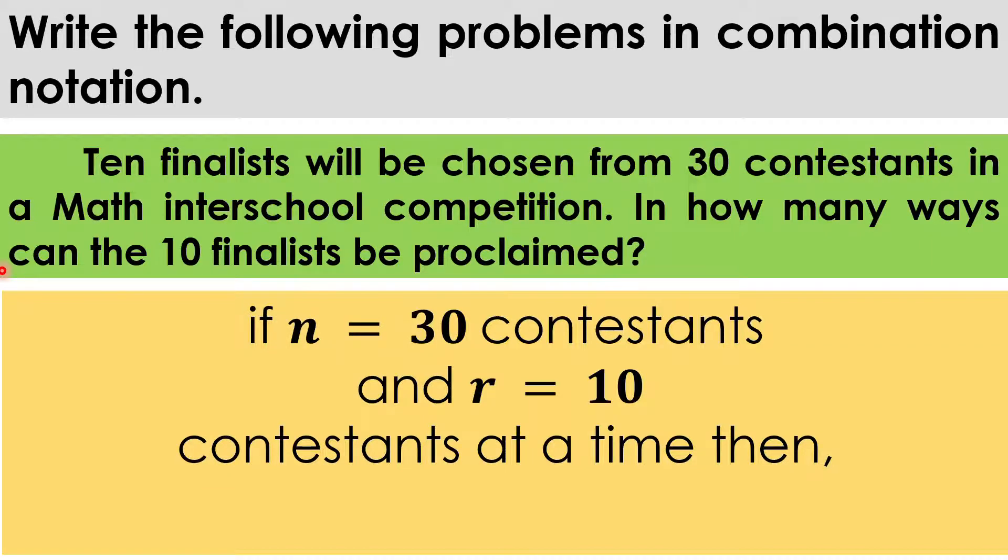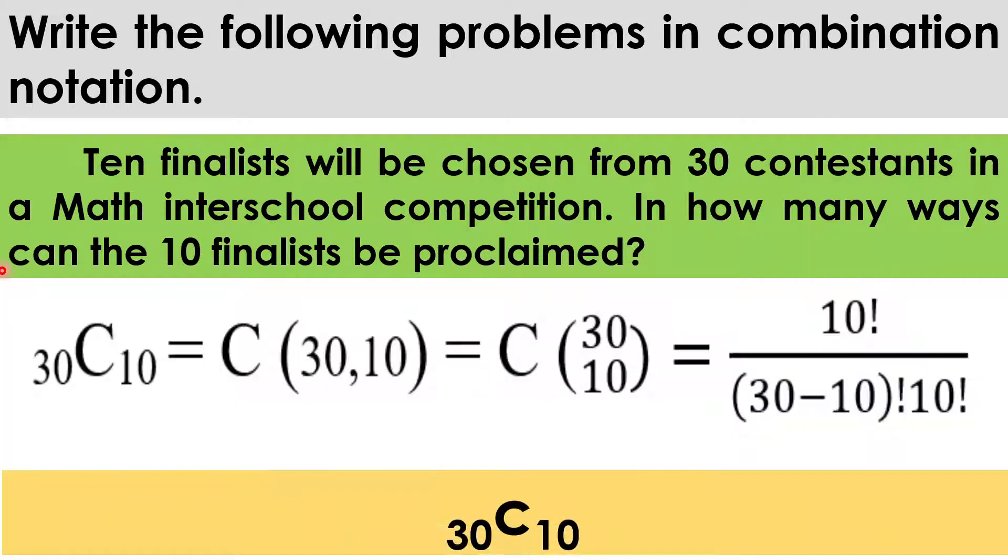So, it means that the 30 contestants will only be chosen from 10 finalists. Therefore, we have here the answer. Pwede rin siyang isulat yung C, then open parenthesis, 30, then comma, 10, then close parenthesis. Or yung nakita ninyo kanina, a while back. Okay? So, next.